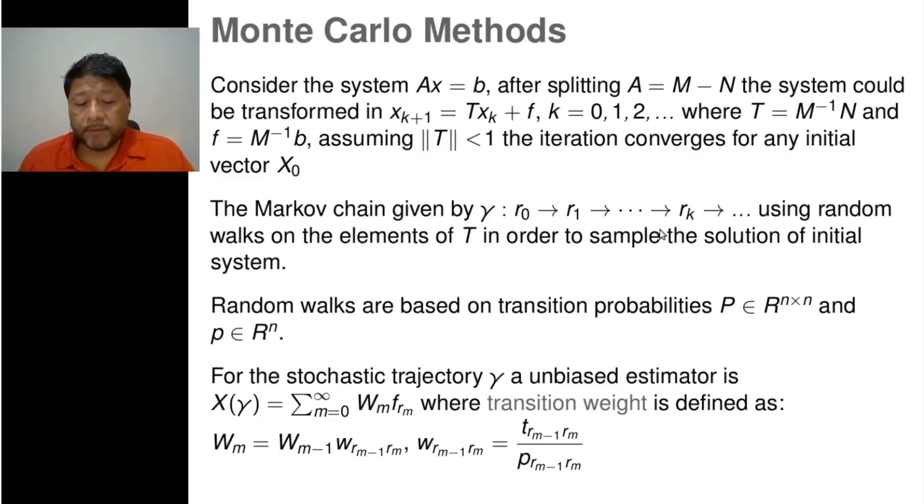The Monte Carlo Methods. Some basic ideas. Consider the system A times X equals B. We can obtain an iterative form splitting the matrix A into two matrices: Matrix M and Matrix N, in order to get the matrix T and the matrix F.